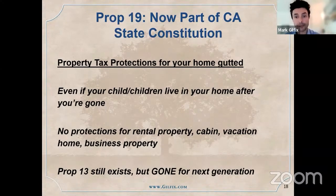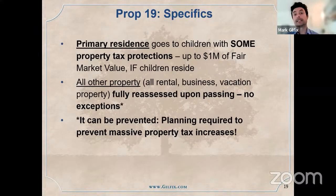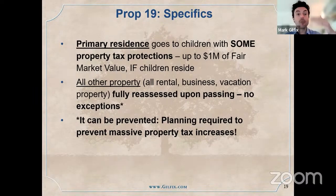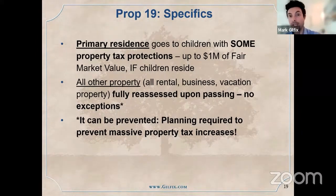In many cases, this forces a sale — which is why this law passed. The Realtors Association put about $35 million into the campaign to pass this because they knew there'd be a lot more sales. For your primary residence, the simple test now is: when you pass away and leave your primary residence to your kids, if they live in it and move in within a year of your passing, the first $1 million in fair market value beyond the assessed value is protected from reassessment. But if your kids do not live in the house, the property tax would be fully reassessed at whatever the house is worth when you pass away — even if that's 30 times higher than the current property tax base.